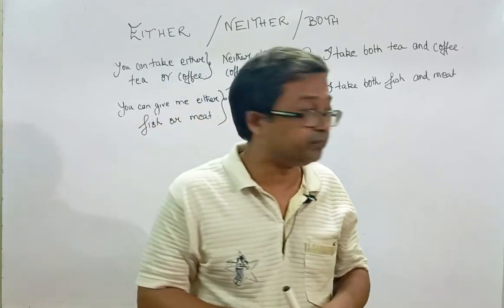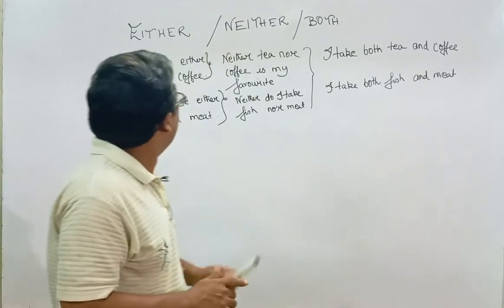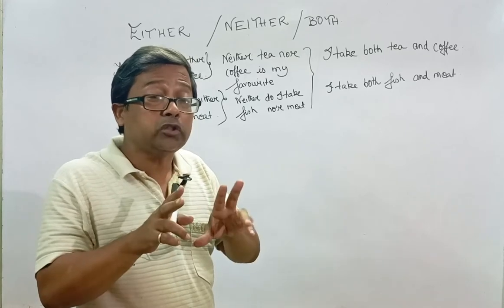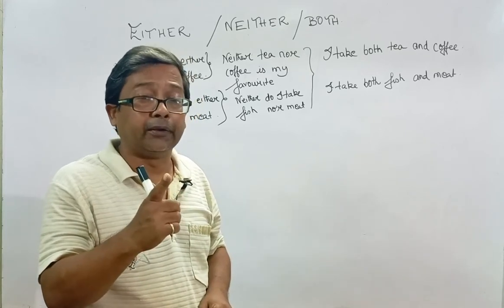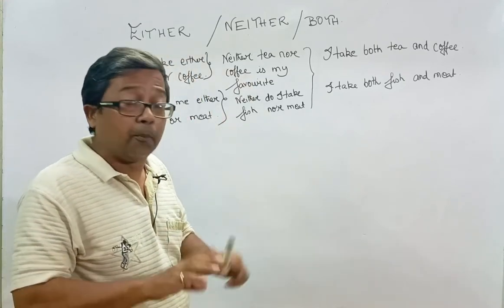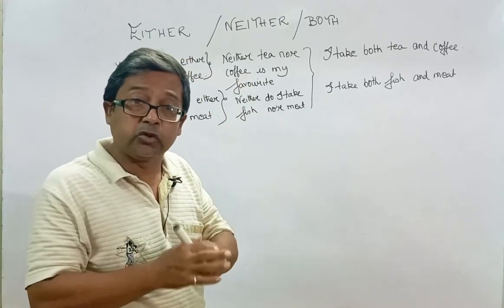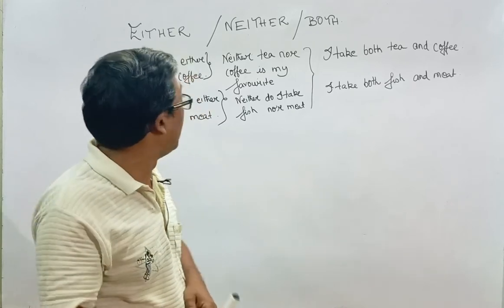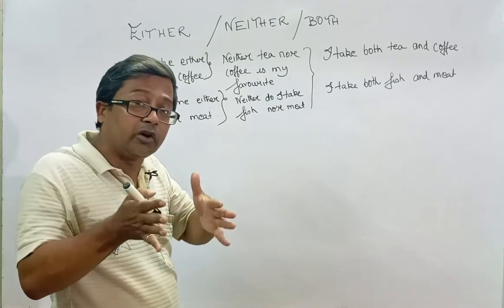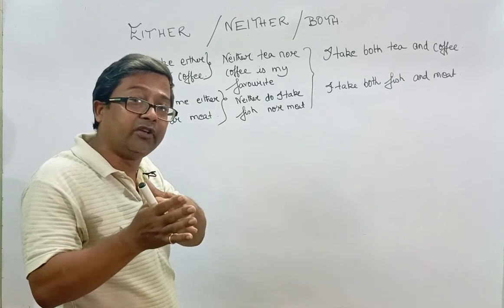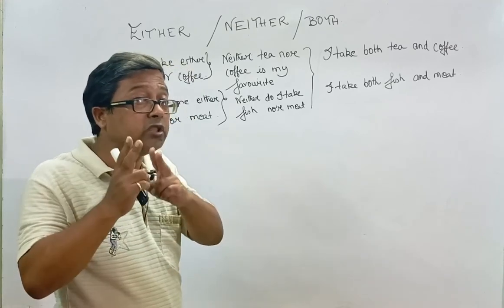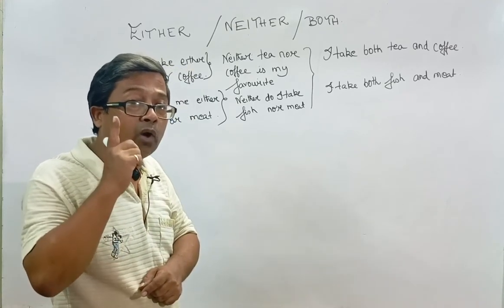Either is for two things, but there is a choice — you will take only one. Remember the key point: either is for two things, but between these two things you have a choice and you will take only one. For example: you can take either tea or coffee. There is a choice between tea and coffee, and you will go for either one.